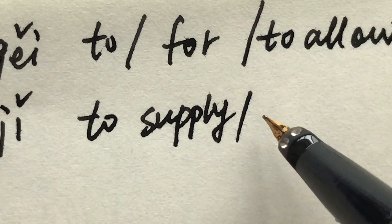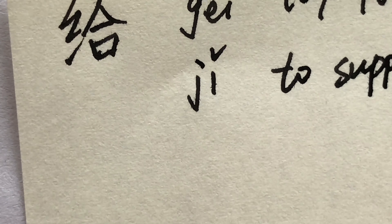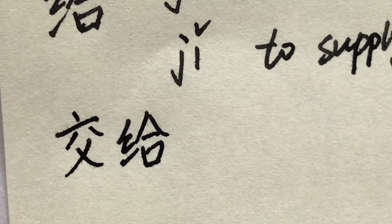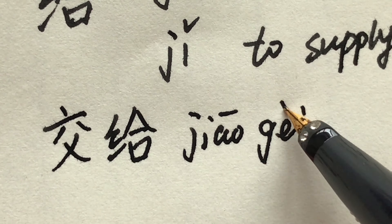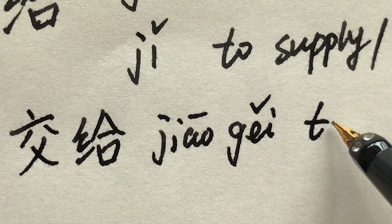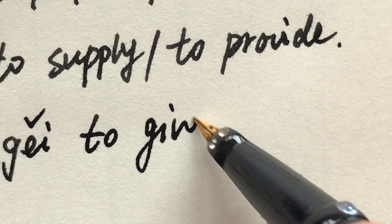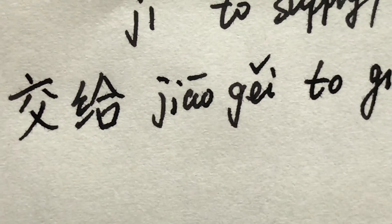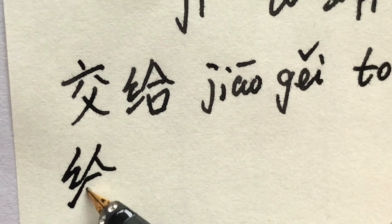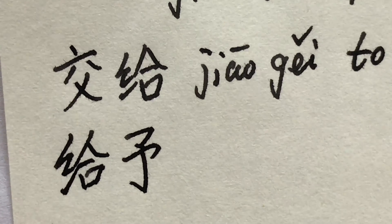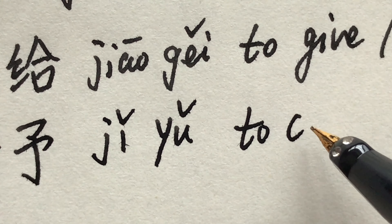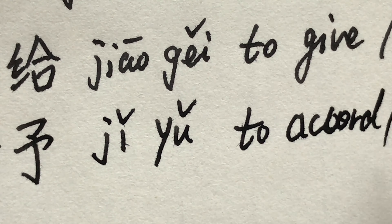Or 'to provide'. For example: 交给 (jiāo gěi) means 'to give' or 'to hand over'. Another example: 吉语 (jǐ yǔ), meaning 'to accord' or 'to give'.